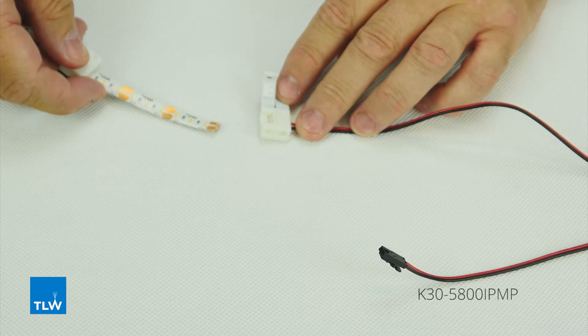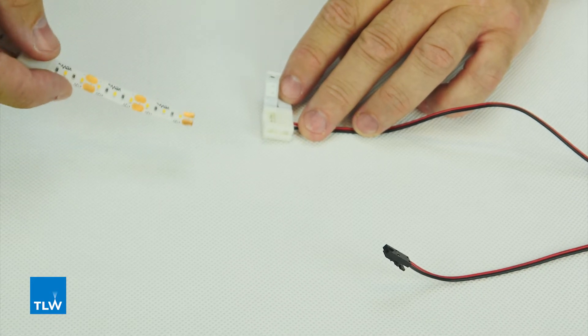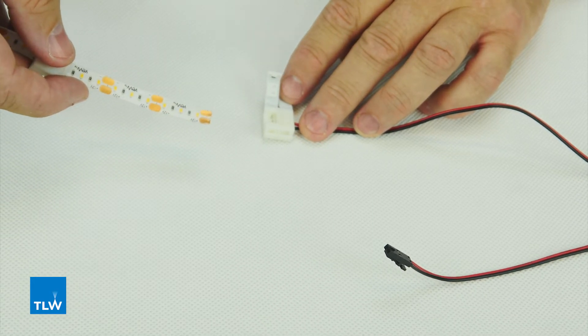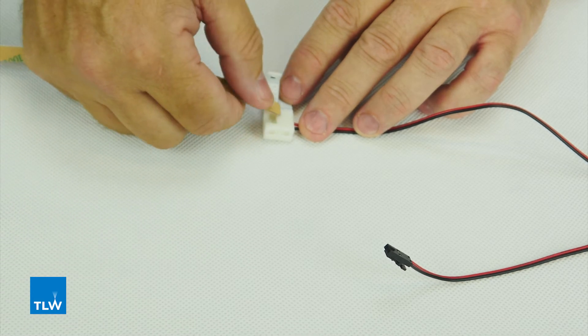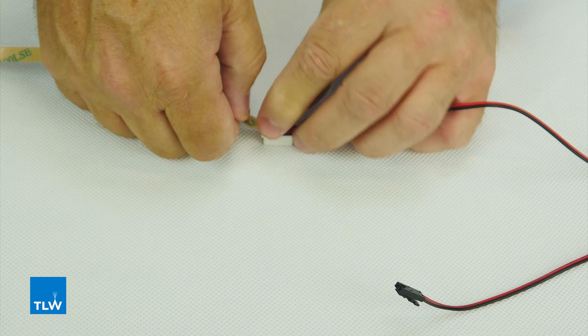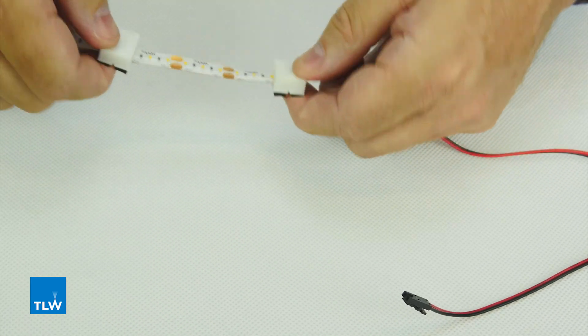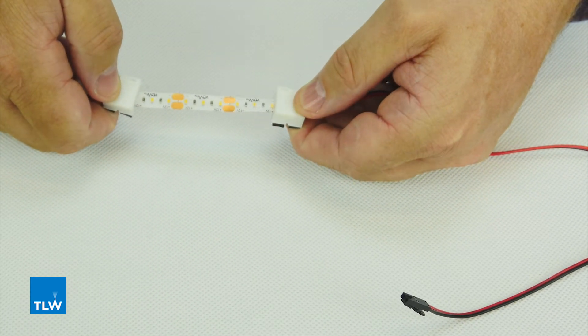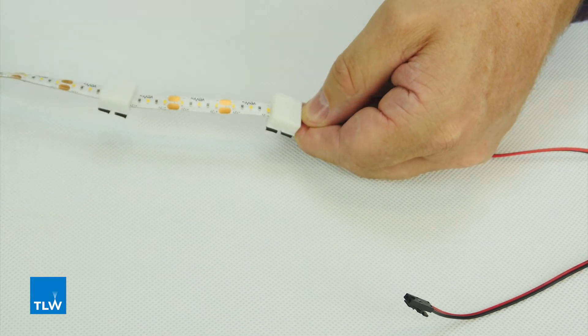This is a K30-58100 IPMP, a two metre driver connection lead. You cut the tape where you can see the copper, place it where the spikes are, push it down onto it, and push these to hold them in place. That gives you a good connection which, when linked to the driver, will light it up.